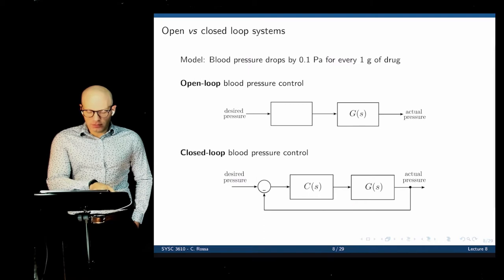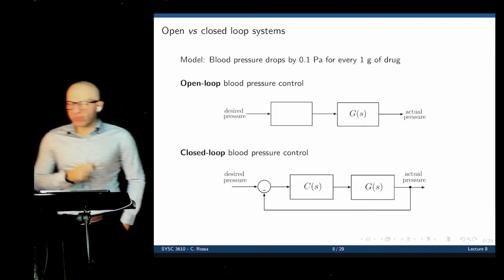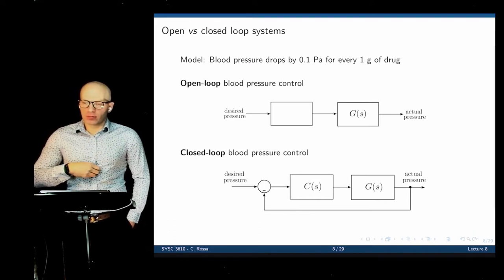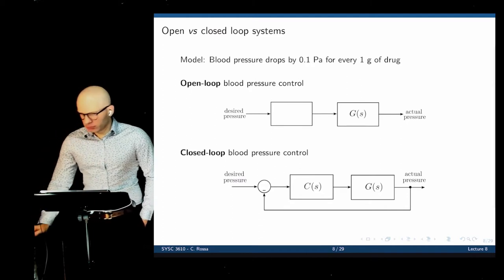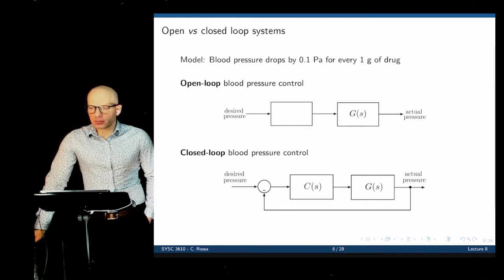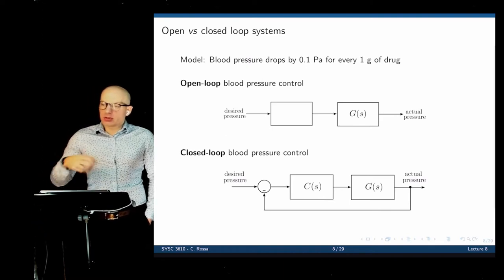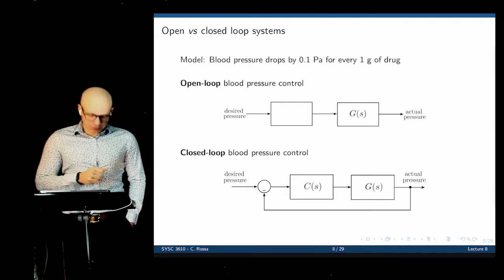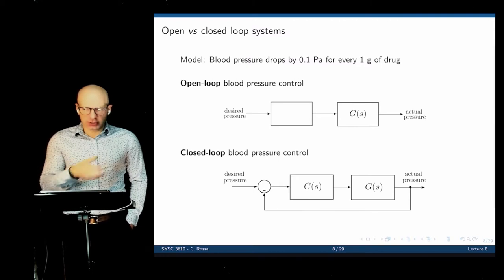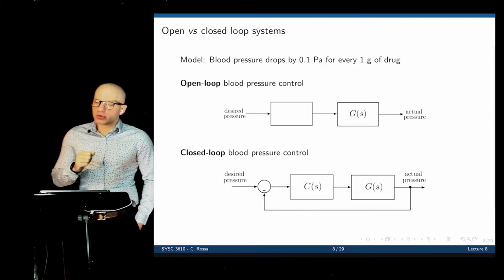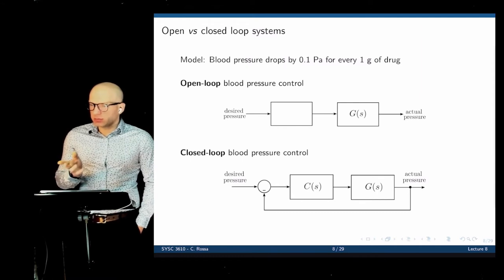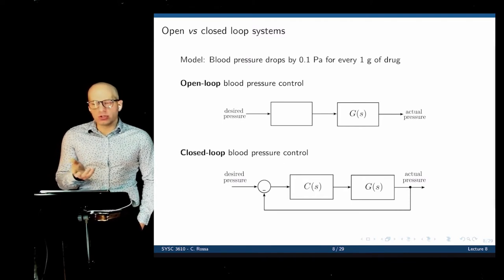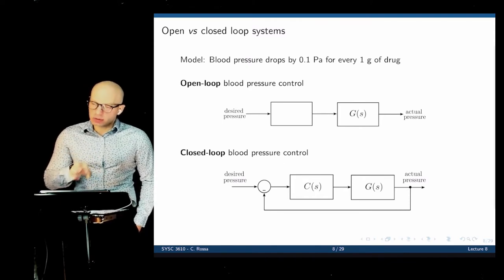Student question: For the open loop, does the relationship always have to be linear? Because we're dealing with linear systems in this course, we need to stick with linear systems. In practice, control logics are not always linear — for example, opening and closing a valve is not a linear process. Most control systems will indeed have nonlinear logics, but within the context of this course, we're going to stick with linear for both open-loop and closed-loop.